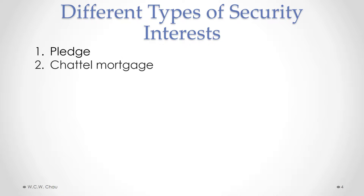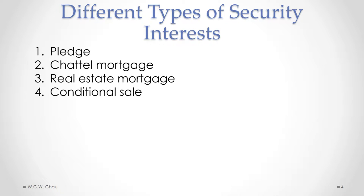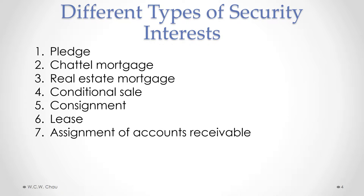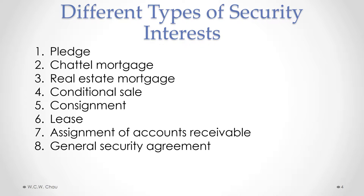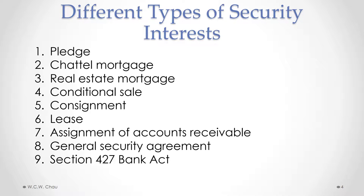The nine types are: first, the pledge; chattel mortgage; a real estate mortgage; a conditional sale; a consignment; a lease; an assignment of accounts receivable; a general security agreement; and a section 427 Bank Act security interest.